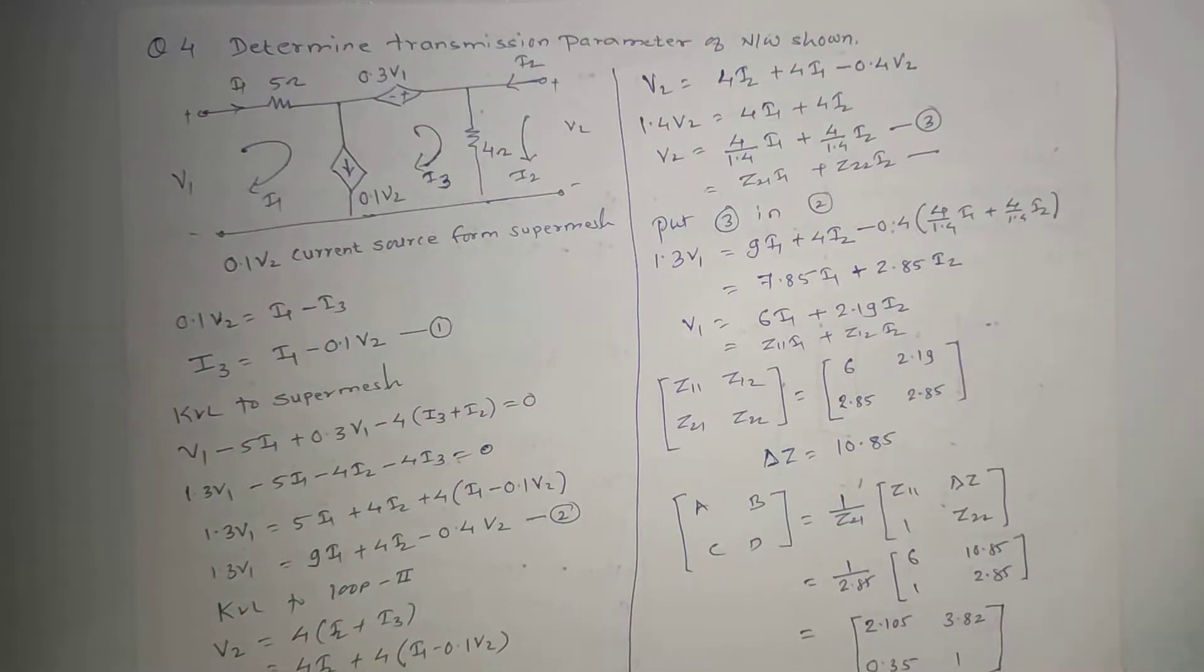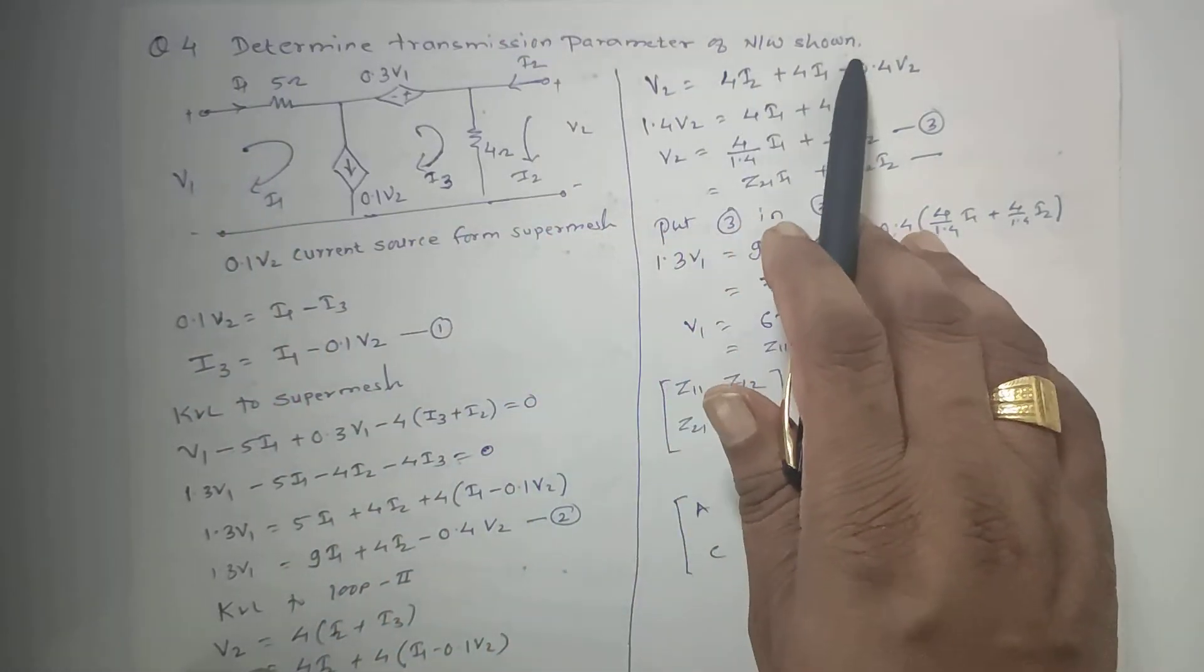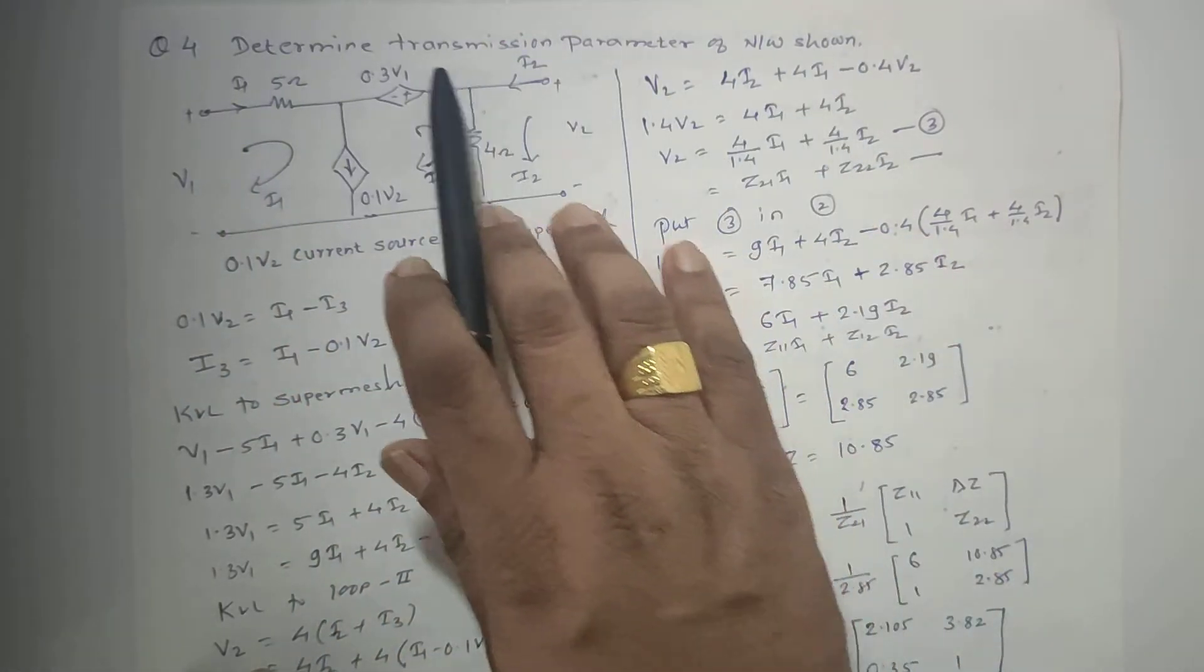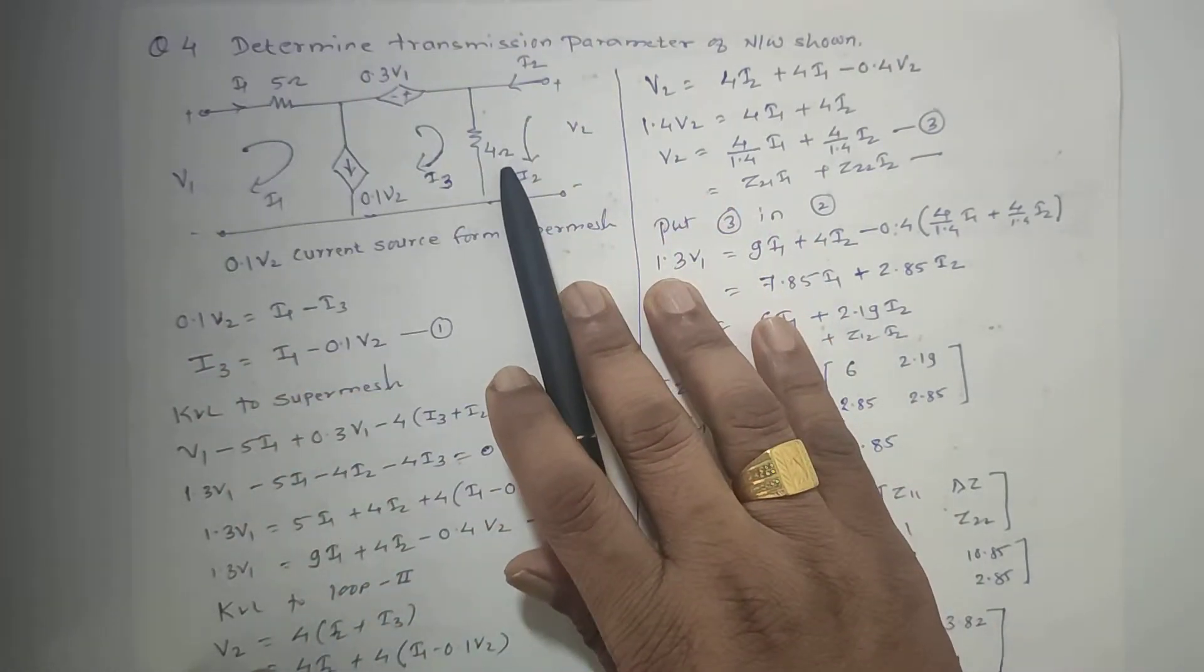Hello everyone, let us see one more problem based on this two-port network. Problem number four. Last time we solved problem three, now this is problem number four: determine transmission parameters of the network. This is a network from which we have to find out the transmission parameters, that is A, B, C, D parameters.